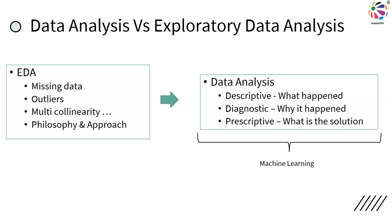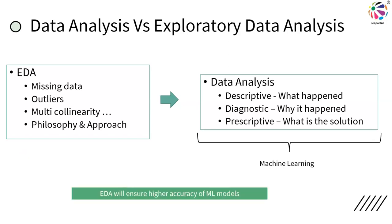EDA is an approach to make the existing data set more valuable. With missing data, outliers, and multicollinearity, what will happen to your data analysis or your machine learning model? The accuracy will be low, and the reliability of the data analysis will be that much lower. The most important thing in machine learning is higher accuracy. End users are using machine learning to take decisions, so machine learning has to be reliable, which means the accuracy of machine learning models needs to be higher. We are ensuring that through EDA.